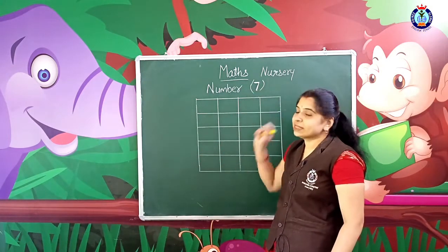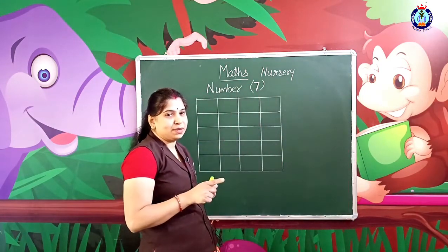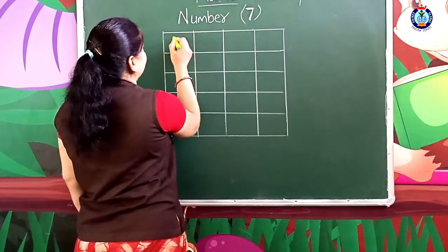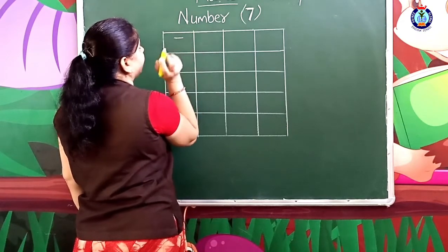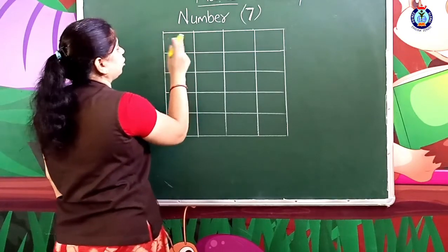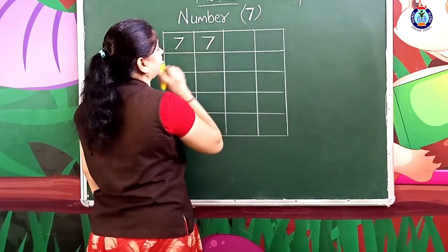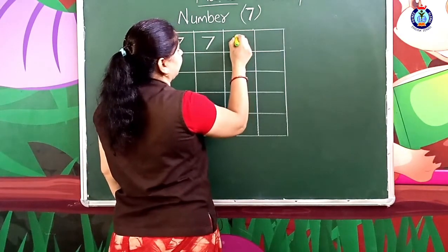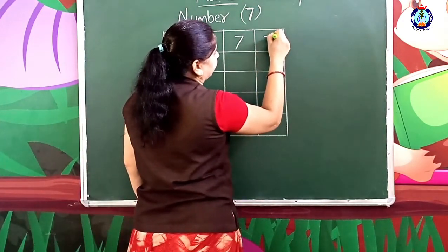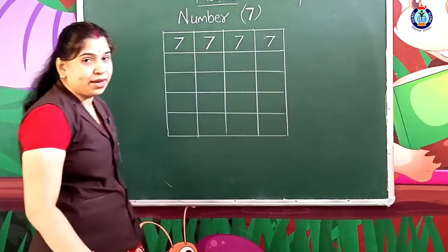Now we will learn how to write the number 7. The number 7 uses a sleeping line and a slanting line. The sleeping line, then the slanting line joined together makes number 7.